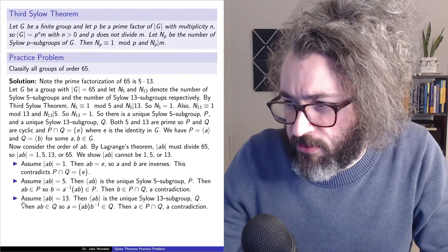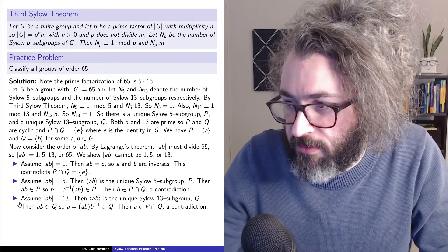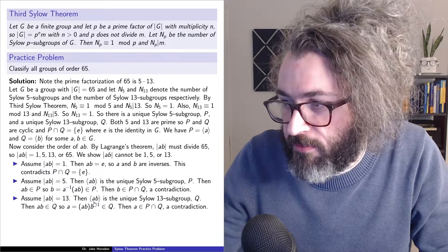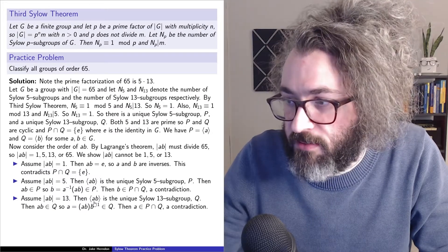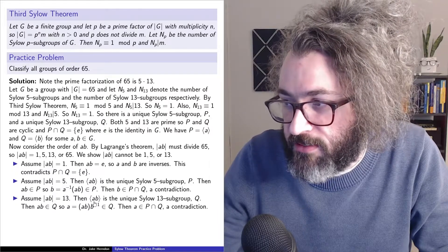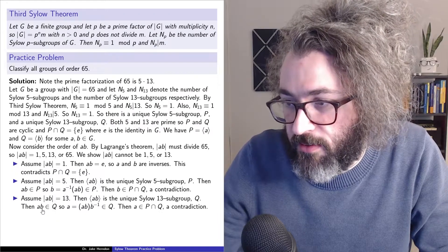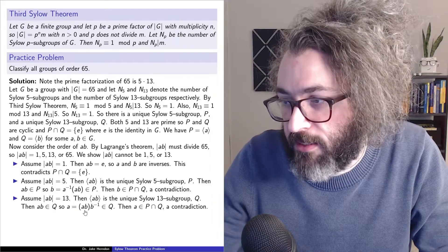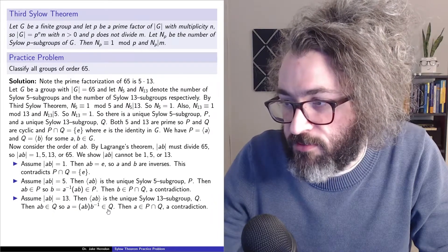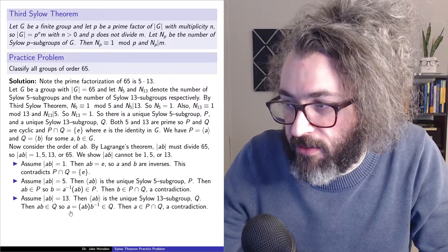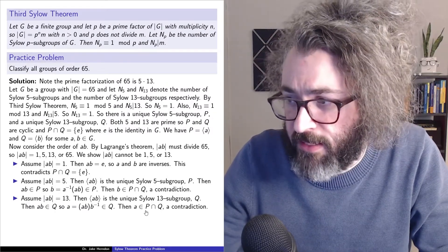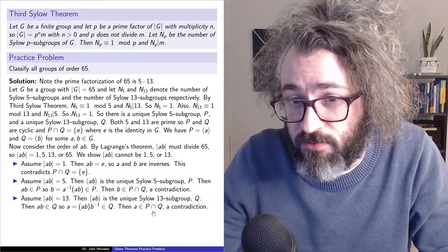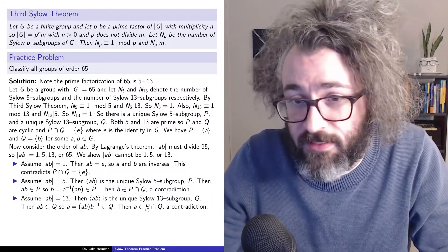So this case is pretty similar. If you assume that the order of a times b is 13, then the group generated by a times b is the unique Sylow 13 subgroup Q, and then a times b is in Q. So a times b times b inverse is also in Q, but that's equal to a. And that means that a is in the intersection of P and Q, which is a contradiction because P and Q don't intersect except for at the identity.